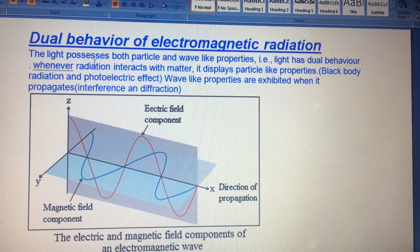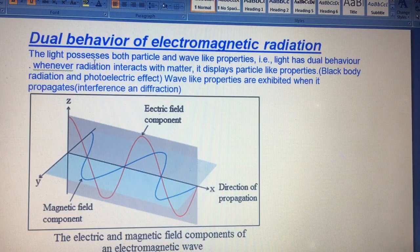In my first video, I already told you that electromagnetic radiation contains electrical as well as magnetic fields. Here we are discussing the behavior of this electromagnetic radiation. Light can also be electromagnetic radiation because light shows particle-like and wave-like properties. This is dual behavior.